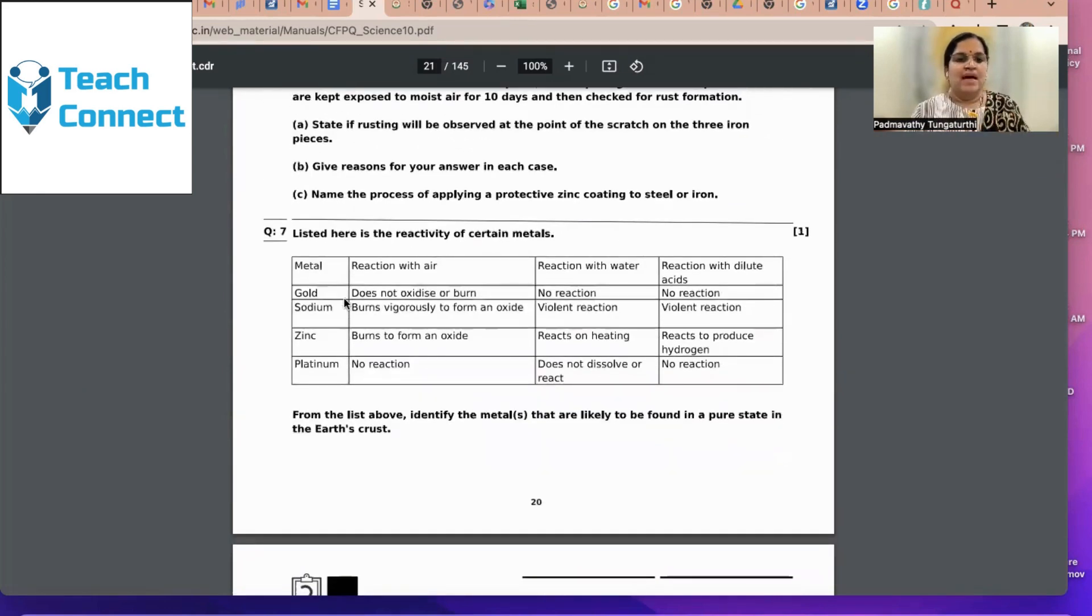Now, look at this. Listed here is the reactivity of certain metals. Some react with air, some react with water, and some others react with dilute acids. First of all, the prerequisite is just go through the complete information, then recollect what is there written in the textbook.